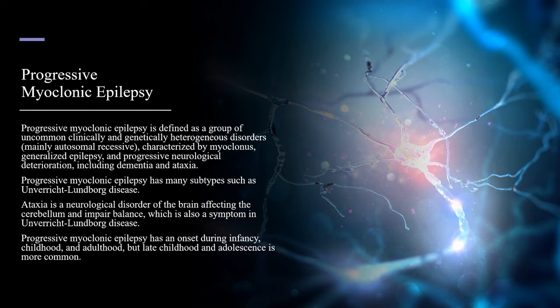Progressive myoclonic epilepsy has an onset during infancy, childhood, and adulthood, but late childhood and adolescence is more common.